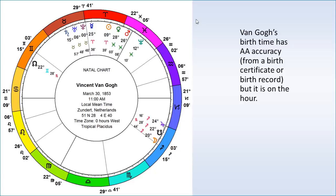His birth time is from a birth certificate, but it's rounded off to the hour — 11 a.m. So maybe it's off by a little bit, but it is from a birth certificate, so it's fairly accurate. In modern Western astrology, we would usually go to the rising sign, look at the ruler, the sun sign, moon sign, stelliums and so on. And in Vedic astrology, we would also put emphasis on the ascendant called the lagna and the ruler of it. But in vibrational astrology, we look for these vibrational patterns.